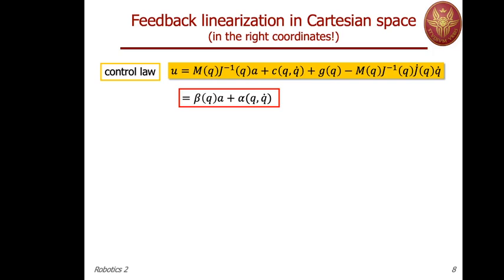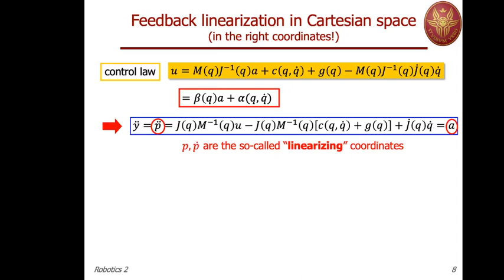The feedback linearization control law is: u equals M(q) times J-inverse(q) times A, plus the Coriolis-centrifugal term, the gravity term — which are being cancelled — and additionally a torque M times an acceleration related to J-dot being nonzero. This is a general nonlinear state feedback of the form alpha(q, q-dot) plus a non-singular beta matrix (function only of q) times the new input A. Applying this to the second derivative of the output gives the linear and decoupled behavior: p-double-dot equals A.